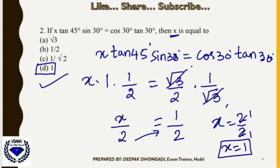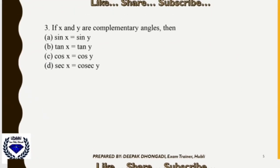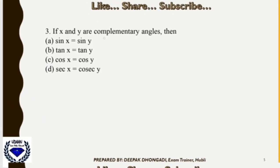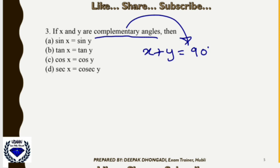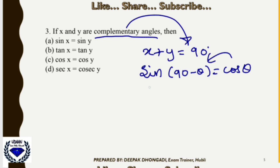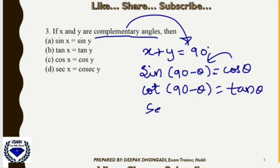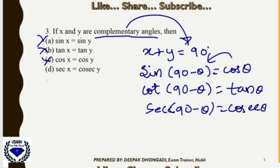Question 3: If x and y are complementary angles — meaning their sum is 90° — find the correct relation. Using complementary angle formulas: sin(90°−θ)=cosθ, cos(90°−θ)=sinθ, cot(90°−θ)=tanθ, tan(90°−θ)=cotθ. Since tan should pair with cot and sin should pair with cos, option C is the one that satisfies this relation.